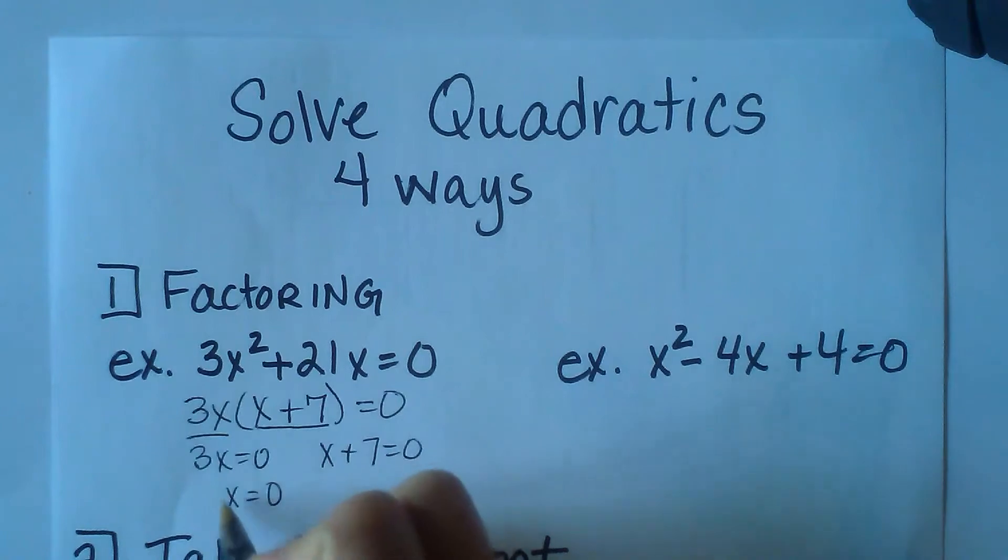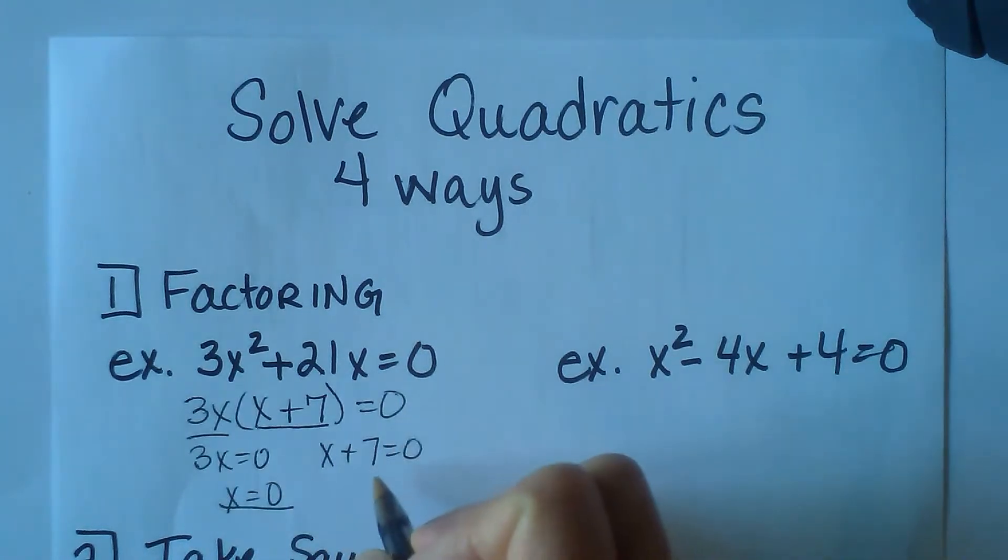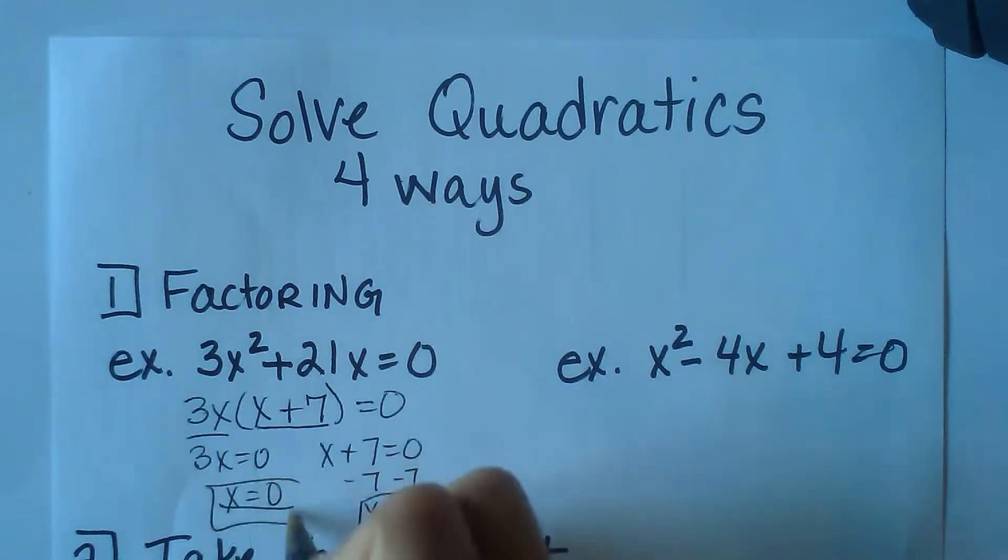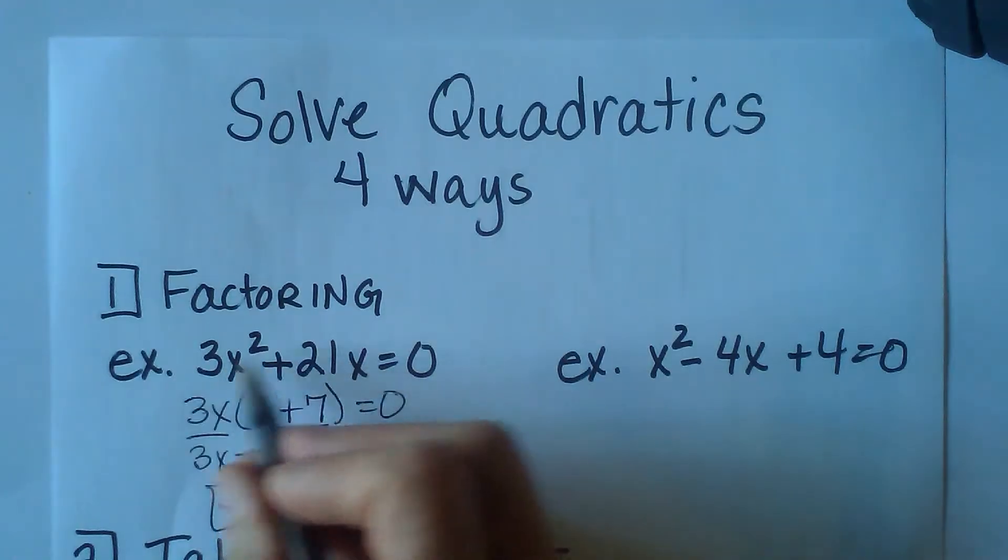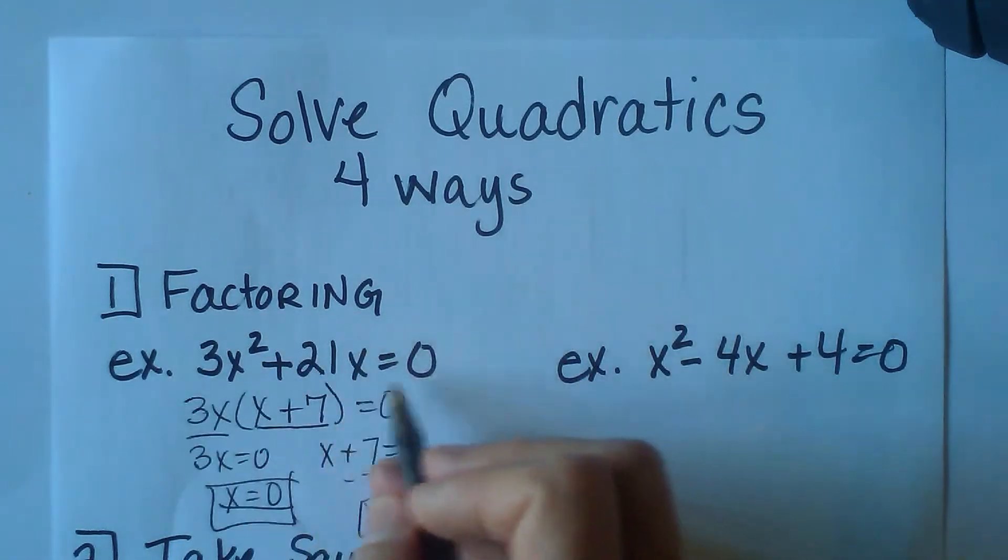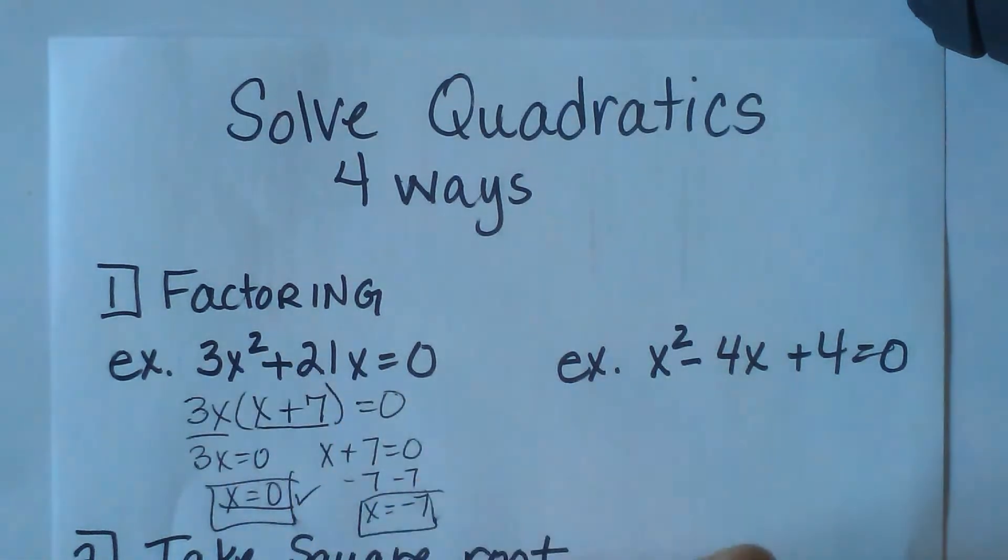Once you set those equal to zero, then you can solve. So this first one has a solution of zero, and the second term has a solution of negative 7. So this one has two solutions that make this equal to zero, when it's zero and when it's negative 7. You can always go back and plug them in and double-check your answers.